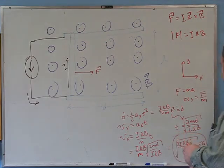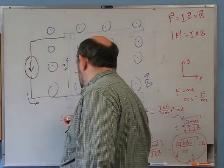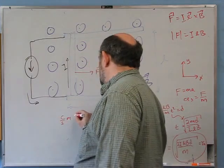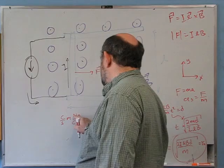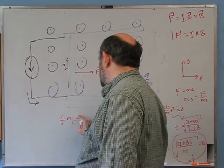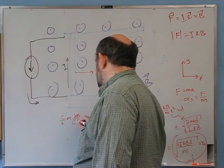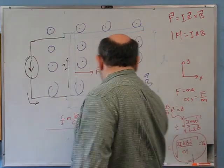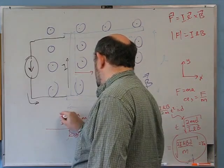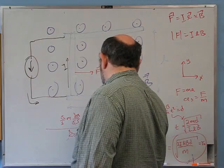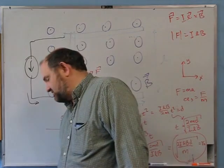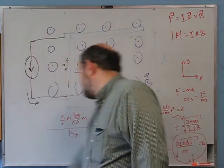Let's make sure the units work. I comes in coulombs per second (amps), L in meters, B in newton·seconds per (coulomb·meter) — equivalently kilogram per (coulomb·second) — d in meters, and m in kilograms. Canceling kilograms, coulombs, and meters leaves meters²/second², and under a square root that gives meters per second. The units work, so we've at least not proven we're wrong.